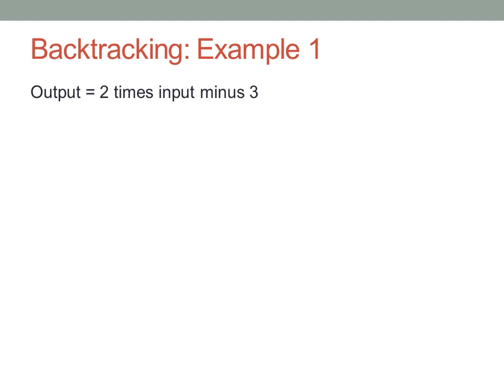Suppose my function rule says the output equals two times the input minus three. That is, whatever I put into my function rule, the output is two times that input value minus three. But what if I know the output value is nine? What input value must I have put in to give me nine as the output value?